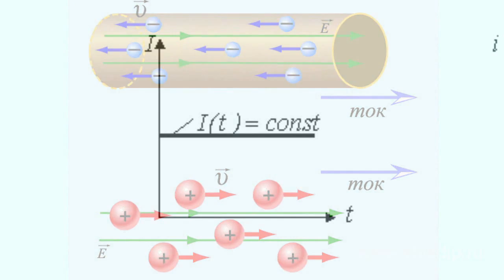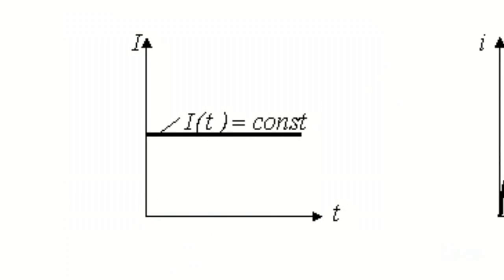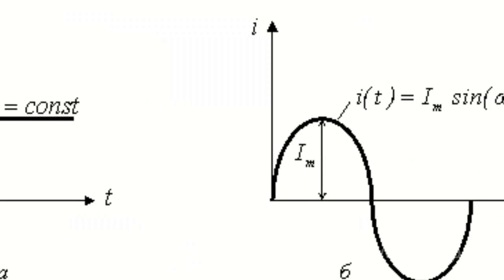There are constant DC (from the English direct current) and alternating AC (from the English alternating current).